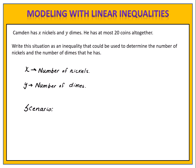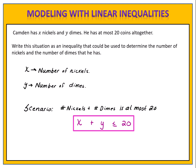We want to understand the scenario. The scenario is that he has these coins and he has at most 20 coins altogether. So the number of nickels and the number of dimes that he has are at most 20. The number of nickels is represented by X, plus the number of dimes is represented by Y, is at most — less than or equal to — 20. This is an inequality that represents the number of nickels and dimes that he has, and we've completed our task with writing the inequality.